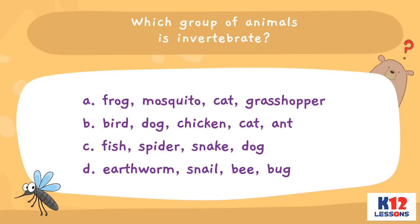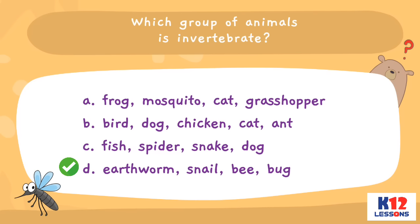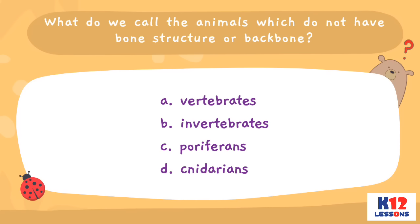Which group of animals is invertebrate? A. Frog, mosquito, cat, grasshopper. B. Bird, dog, chicken, cat, ant. C. Fish, spider, snake, dog. D. Earthworm, snail, bug. What do we call the animals which do not have bone structure or backbone? A. Vertebrates. B. Invertebrates. C. Poriferans. D. Cnidarians.